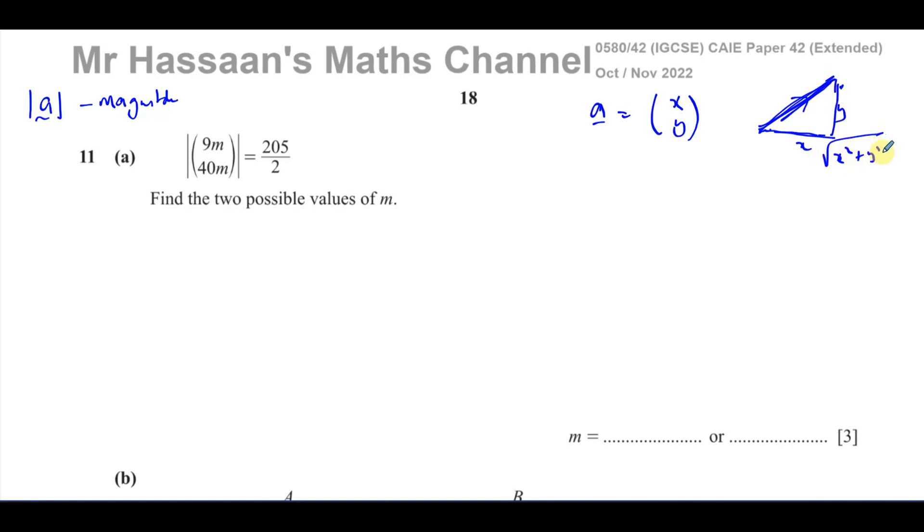So they've told us that the magnitude of this vector 9m and 40m is 205 over 2. So basically, what we can do is if we square 9m, all of 9m, and we add to that the square of 40m, that will give us 205 over 2 squared. It's like the square root of this is equal to the square root of that. So we don't have to put the square root because we want to find m in the end anyway. So I'll write the square of the two shorter sides is equal to the square of the hypotenuse.